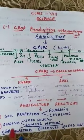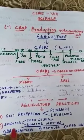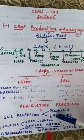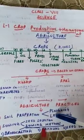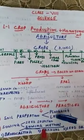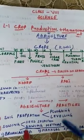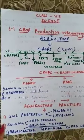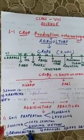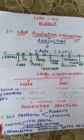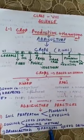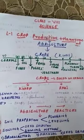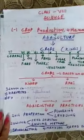Then sowing of seeds, which also involves two steps. First, good quality seeds are selected for a better harvest, and then the sowing methods. There are three different sowing methods: broadcasting, manual sowing, and sowing with the help of a seed drill.